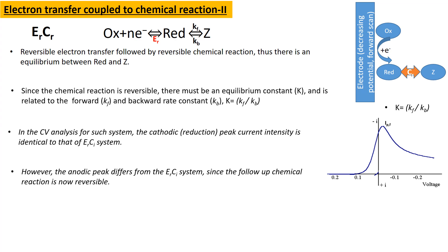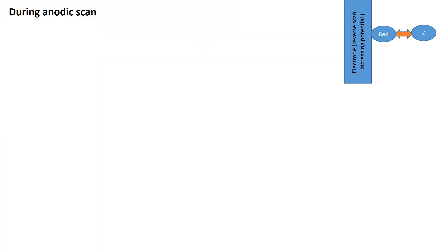However, for the anodic peak the case is different. We will see how the anodic scan affects the nature of the cyclic voltammetric plot — what is the nature of the CV plot during the anodic scan at different conditions. During the anodic scan or the reverse electrode transfer process, the concentration of red in the vicinity of the electrode is maintained by the chemical equilibrium between red and Z.